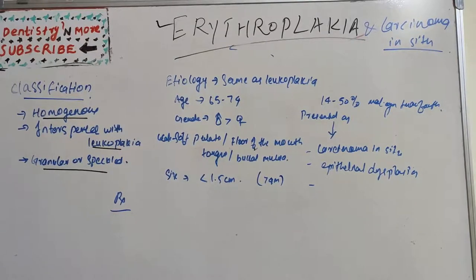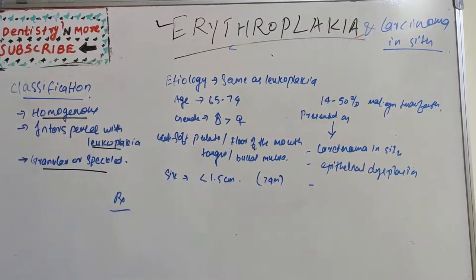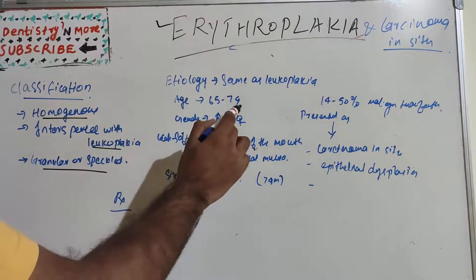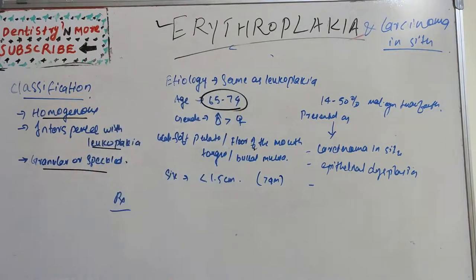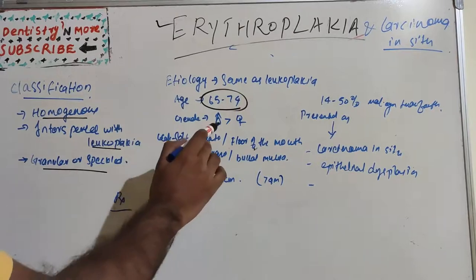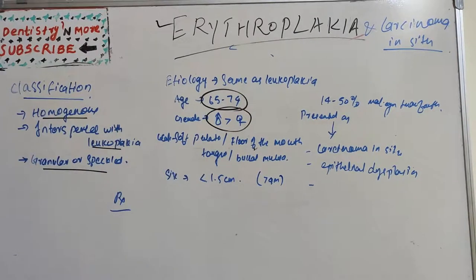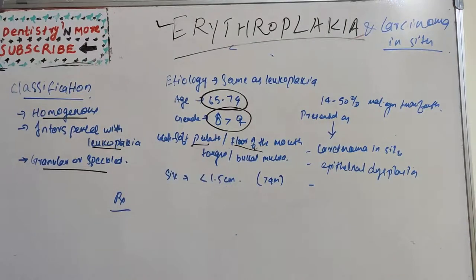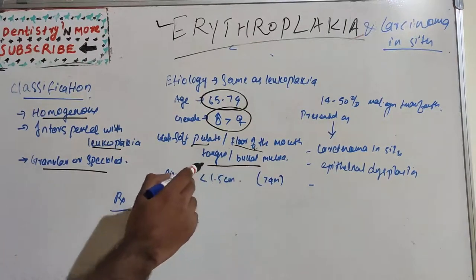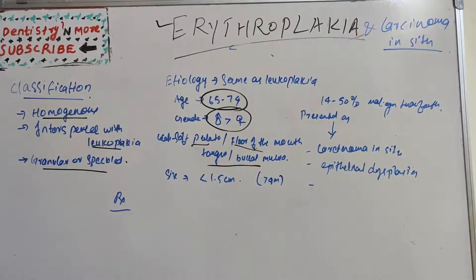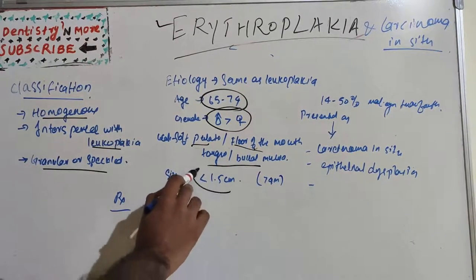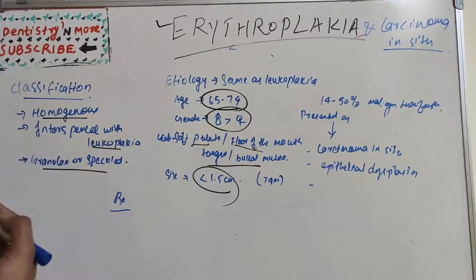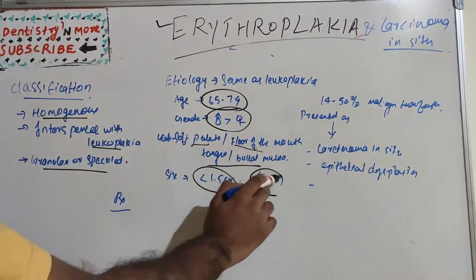The most common etiology is just as leukoplakia, mainly affecting middle age people with peak incidence 65 to 74 years. Gender predilection is on men. Location is basically seen on soft palate, floor of the mouth, buccal mucosa, and tongue. Size: the typical lesion is most commonly less than 1.5 centimeter, but sometimes it may reach up to greater than 4 centimeters.